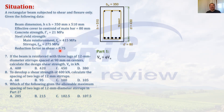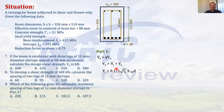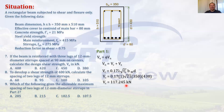Vn is the sum of Vc and Vs, where Vc is the shear strength provided by concrete and Vs is provided by steel. Since the beam is subjected to shear and flexure only, Vc = 0.17 λ√fc' · bw · d. Assuming normal weight concrete, λ = 1. Substituting bw = 350 and d = 430, Vc = 117.2 kN.